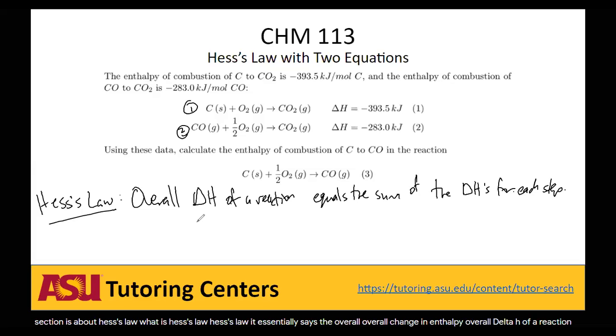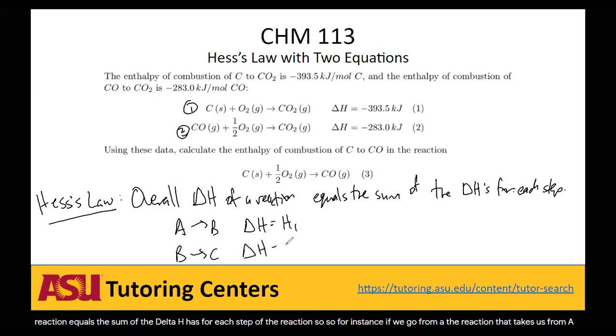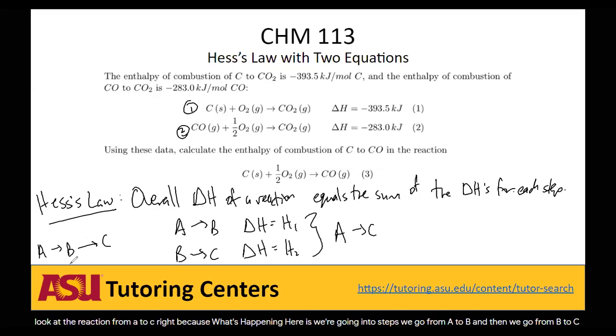So for instance, if we go from A to C, if the reaction that takes us from A to B has an enthalpy of, let's say, H1, and the reaction that takes us from B to C has an enthalpy of, let's say, H2, then what we can do is we can look at the reaction from A to C. Because what's happening here is we're going in two steps. We go from A to B, and then we go from B to C. So what if we just want to look at the overall reaction that takes place, that starts at A and goes to C? Well, the reaction from A to B has an enthalpy of H1, the reaction from B to C has an enthalpy of H2. So the reaction from A to C will have an enthalpy of H1 plus H2.